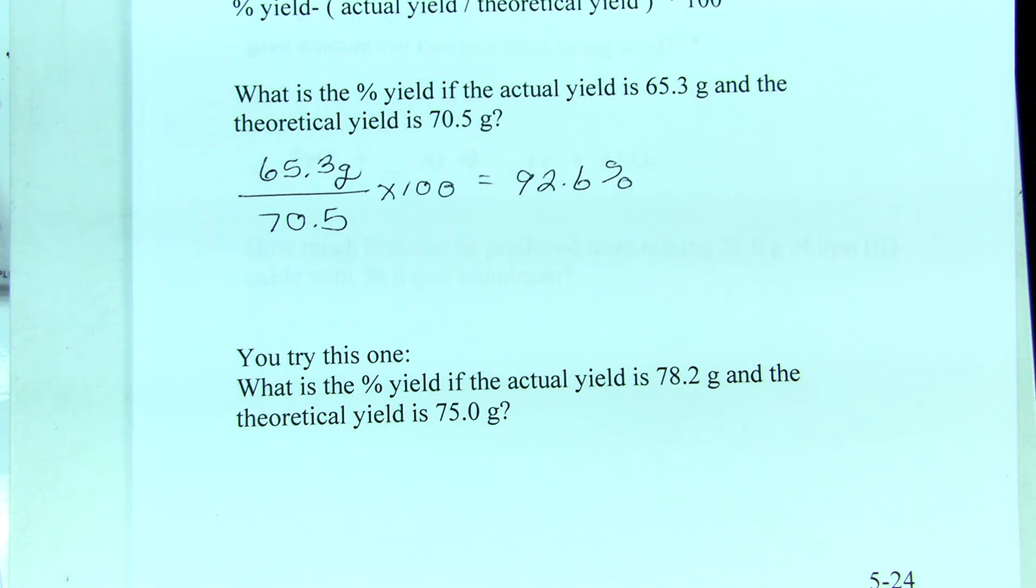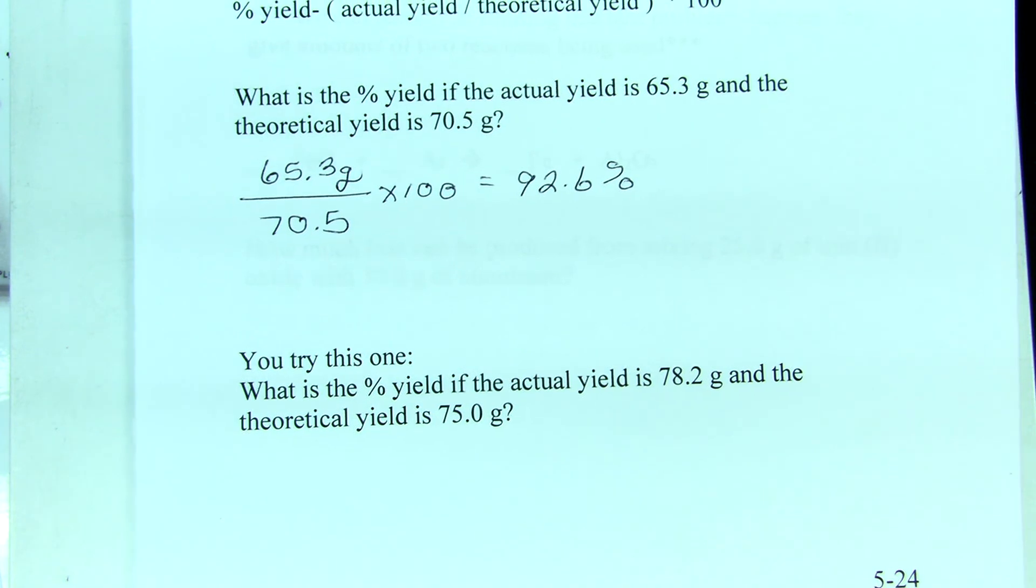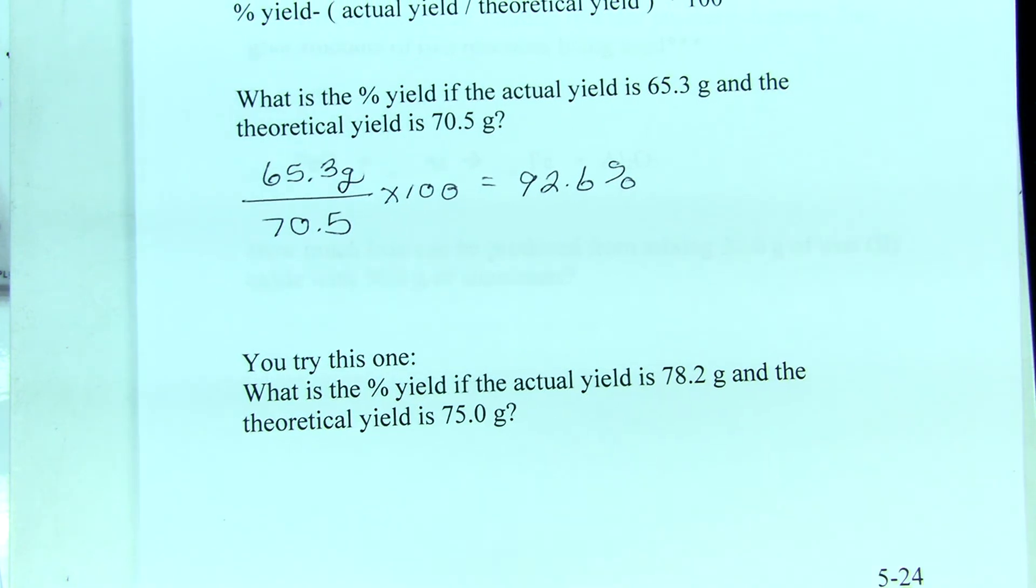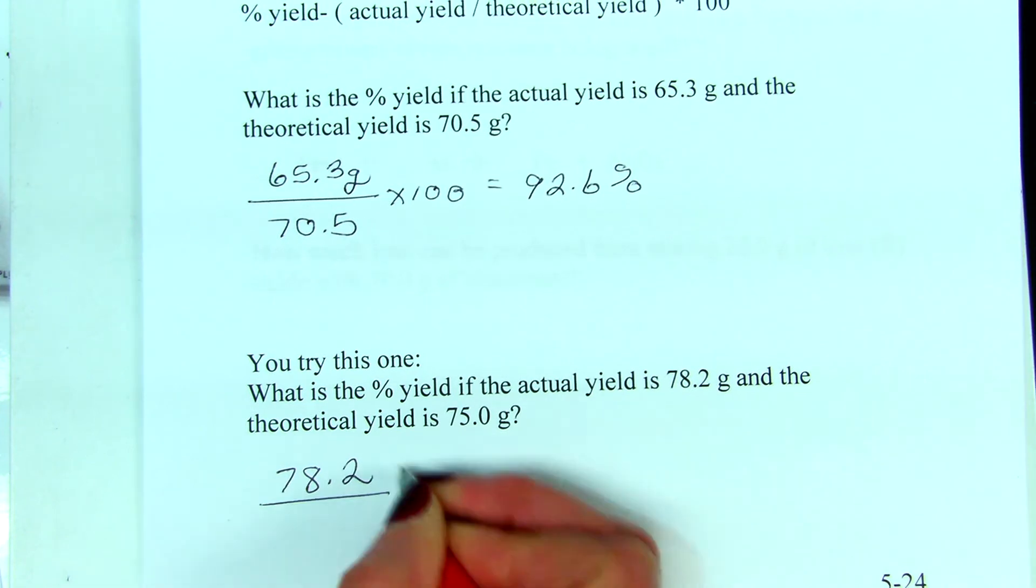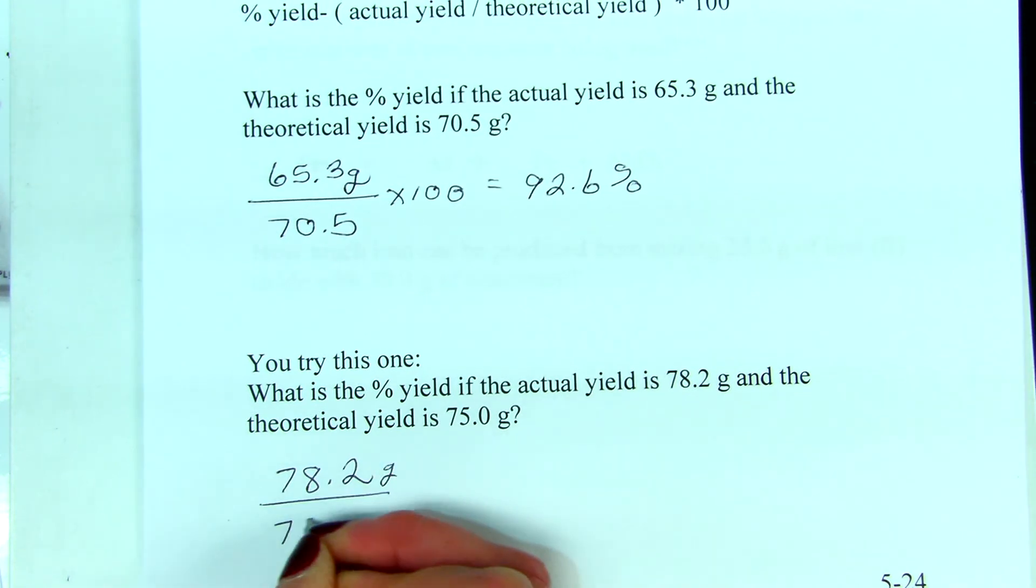So if we look at the next one, tell me how to set this one up. What goes on the top? And what goes on the bottom? The 75.0.